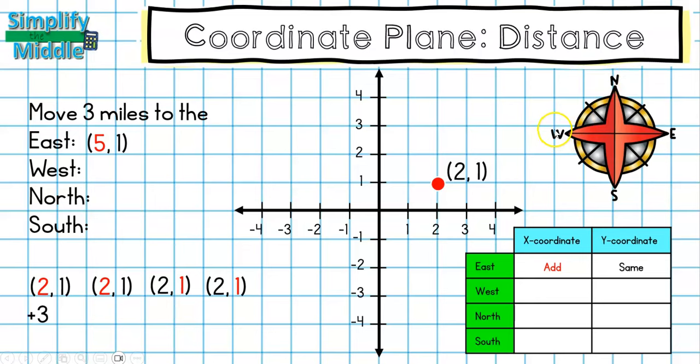To move to the west, west goes this direction. So I can see I'm moving over here, and I'm moving 3. So I'm actually going to be subtracting, but I'm only moving on my x-coordinate. So I'm going to subtract 3 from 2, and I'll keep my y-coordinate the same because it didn't go up or down. And 2 minus 3 is going to give me (-1, 1).